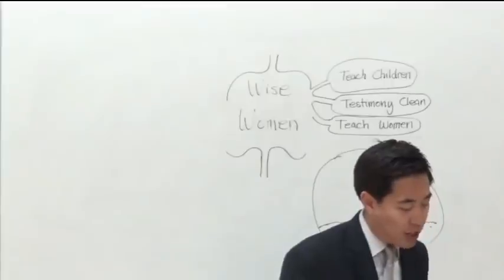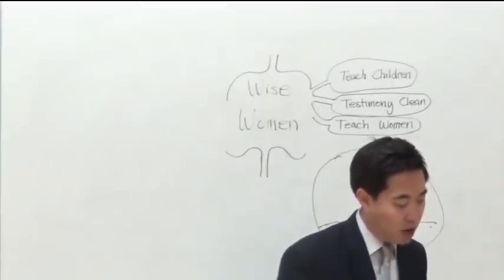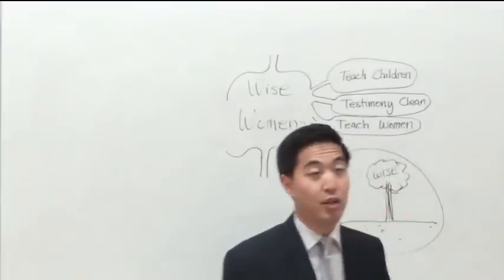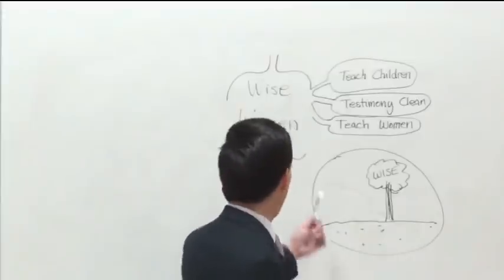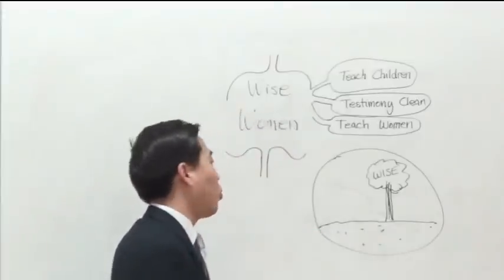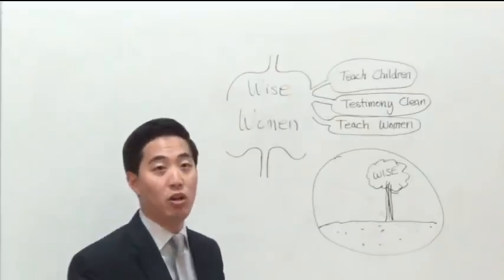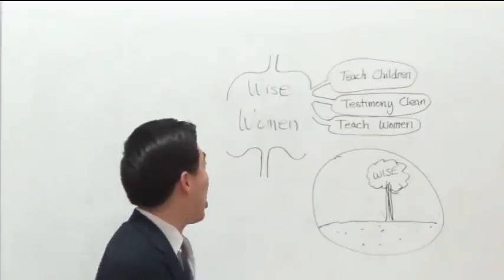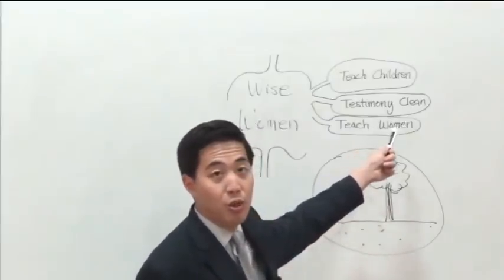Why? Verse four, it's other women, that they may teach the young women to be sober, to love their husbands, to love their children. Look at that. Women are necessary to teach other women. I don't understand where women are seeking worldly position, worldly roles, where they can be a leader and a teacher. Why is it the world's jobs and offers? Why can't it be God's job and offer that he gives to you women?